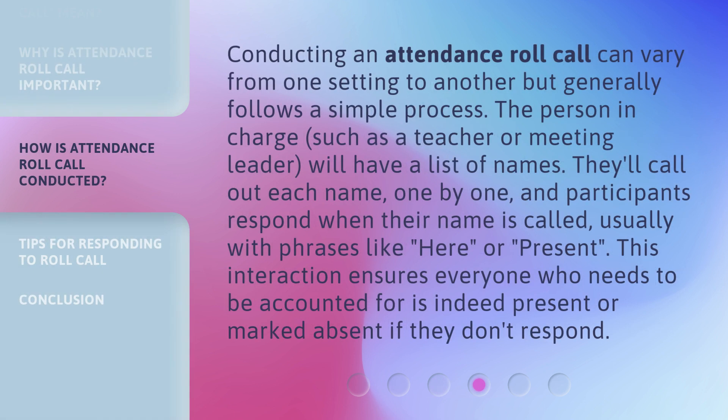Conducting an attendance roll call can vary from one setting to another, but generally follows a simple process. The person in charge, such as a teacher or meeting leader, will have a list of names. They'll call out each name one by one, and participants respond when their name is called, usually with phrases like "here" or "present." This interaction ensures everyone who needs to be accounted for is indeed present, or marked absent if they don't respond.